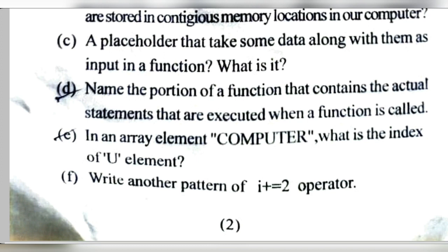Number E — In the array element 'COMPUTER', what is the index of 'U'? The array index starts at 0, so counting: C=0, O=1, M=2, P=3, U=4. Therefore, the index of U is 4.